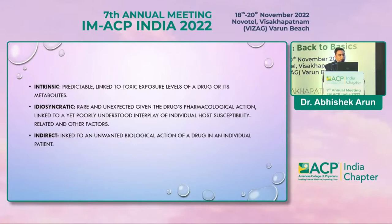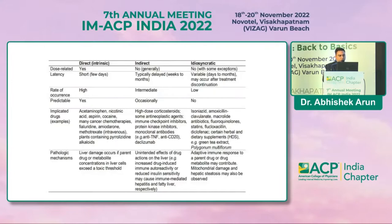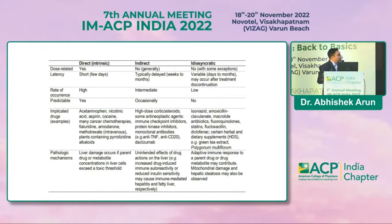Indirect injury is linked to an unwanted biological action of a drug on an individual patient. Comparing the three types: direct (intrinsic) is dose-related, whereas indirect and idiosyncratic are not. The latency period in direct liver injury is much shorter than indirect or idiosyncratic types. Rate of recurrence is very high in direct injury compared to the other types. Direct injury is predictable, whereas indirect and idiosyncratic are generally not. Implicated drugs for direct injury include acetaminophen, nicotinic acid, aspirin, cocaine, cancer chemotherapies, amiodarone, and methotrexate.